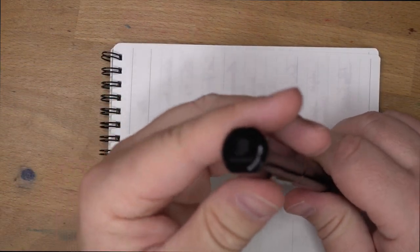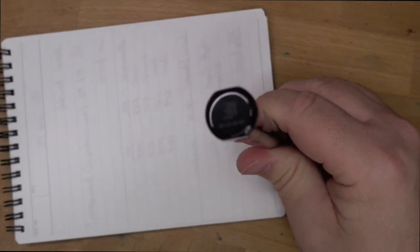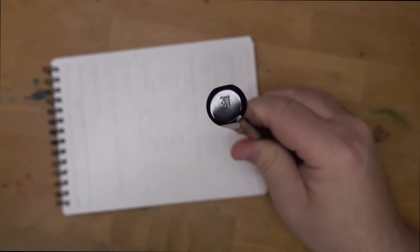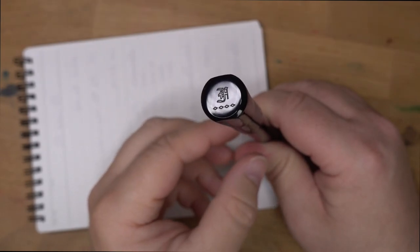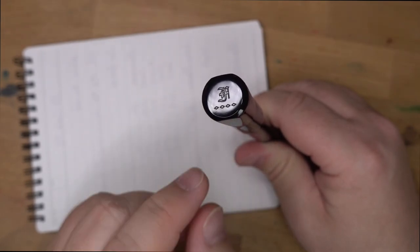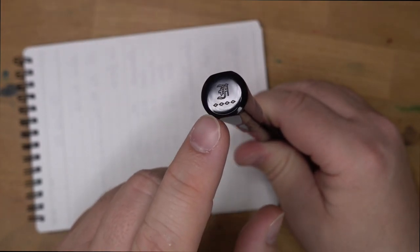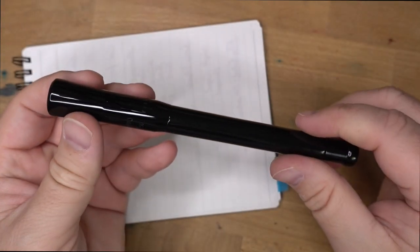What else? Also, you'll see the Franklin Christoph logo there at the top of the cap. Right there. Yeah, perfect lighting. Good job with the script F and then the four diamonds that are the Franklin Christoph logo.